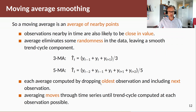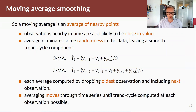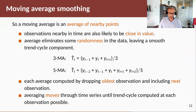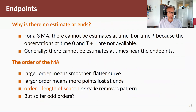Each average is computed by dropping the oldest observation and including the next observation — hence it moves through time, moving through the time series until the trend cycle is computed at each possible observation. So why is there no estimate of the trend at the endpoints?